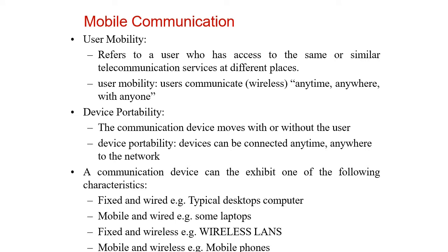There are two types of devices used in mobile communication: user mobility and device portability. User mobility refers to a user who is communicating wirelessly and may keep on moving anytime, anywhere, with anyone. Device portability refers to your laptop, wireless LAN, or mobile device, which may also be moving from one place to another, getting connected from a remote place anytime, anywhere to the network.